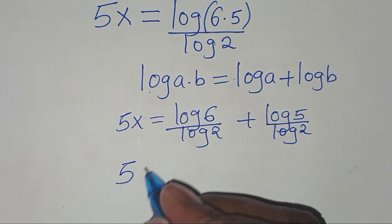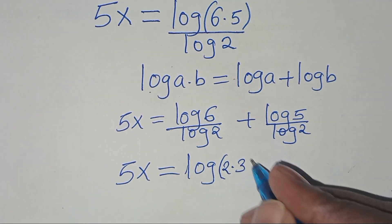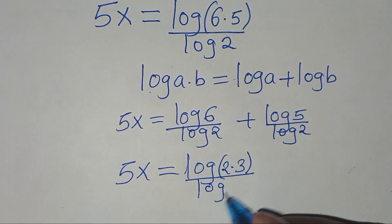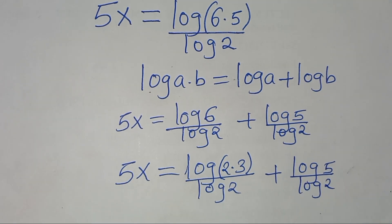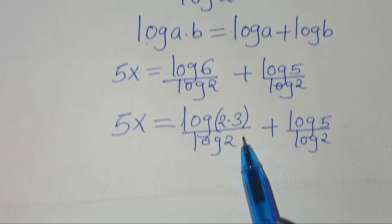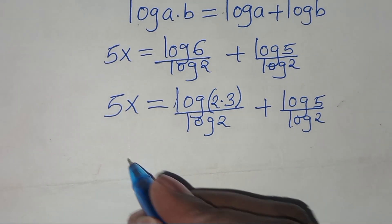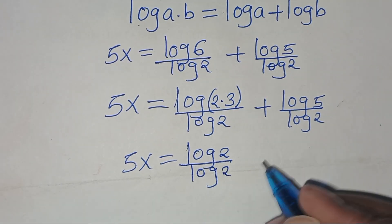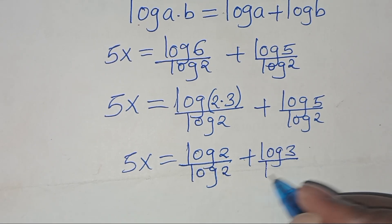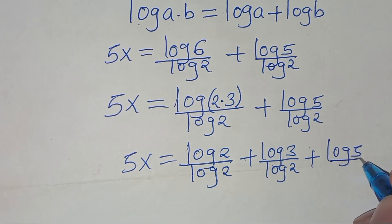Next, we can express 6 as 2 times 3, so 5x equals log(2 times 3) divided by log 2, plus log 5 divided by log 2. Since log(2 times 3) equals log 2 plus log 3, applying this property again gives 5x equals (log 2 divided by log 2) plus (log 3 divided by log 2) plus (log 5 divided by log 2).